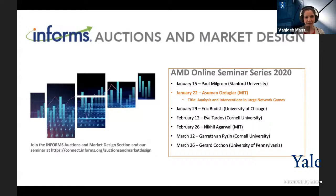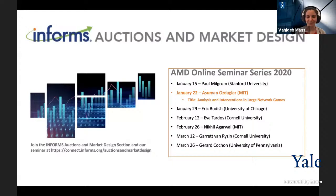She is the department head of EECS as well as the Deputy Dean of Academics in the Schwarzman College of Computing. Her research expertise includes optimization theory, distributed optimization and control, and network analysis. She has received numerous awards including a Microsoft Fellowship, NSF CAREER Award, and Donald Eckman Award from the American Automatic Control Council.